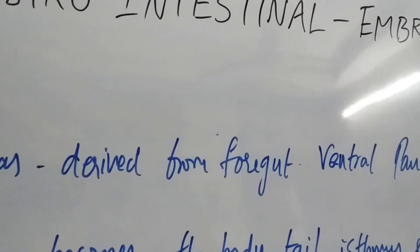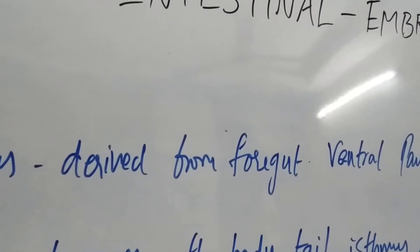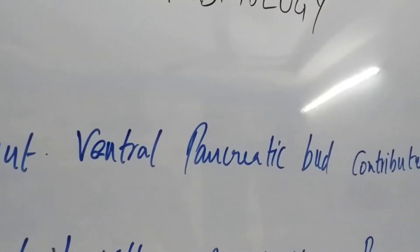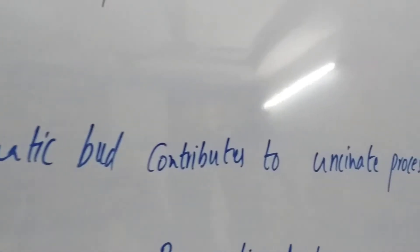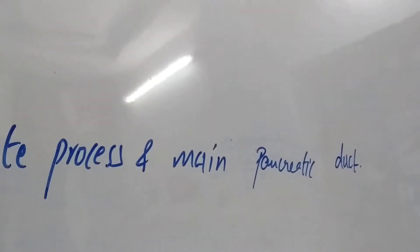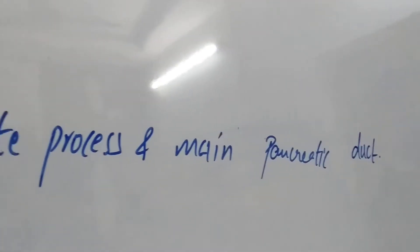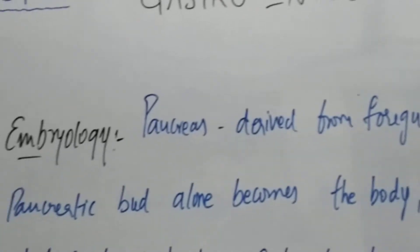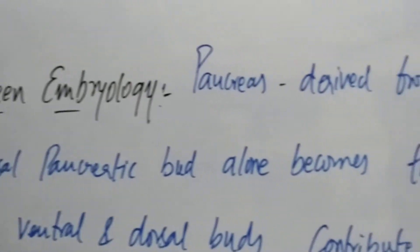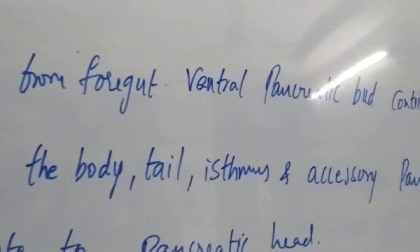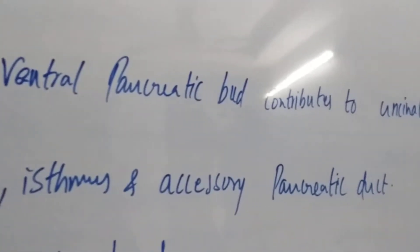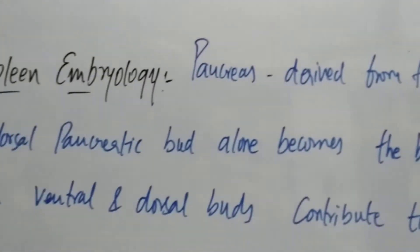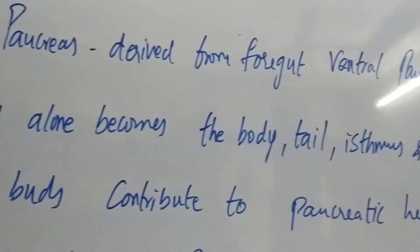The last topic is pancreas and spleen embryology. The pancreas is derived from the foregut. The ventral pancreatic bud contributes to the uncinate process and main pancreatic duct. The dorsal pancreatic bud alone becomes the body, tail, isthmus, and accessory pancreatic duct. Both ventral and dorsal buds contribute to the pancreatic head.